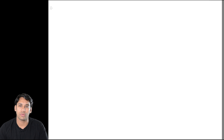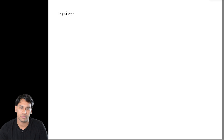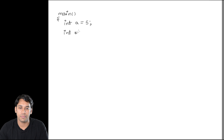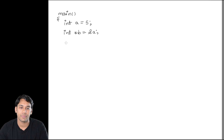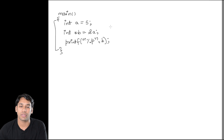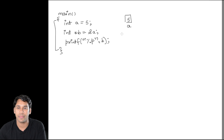In the last class we discussed about pointers and how to declare a pointer. Now let us move forward. For example, if I write main, int a is equal to 5, then int star b is equal to address of a, and then printf %p, b. So in this program, there is a variable a and the value stored by variable a is 5.